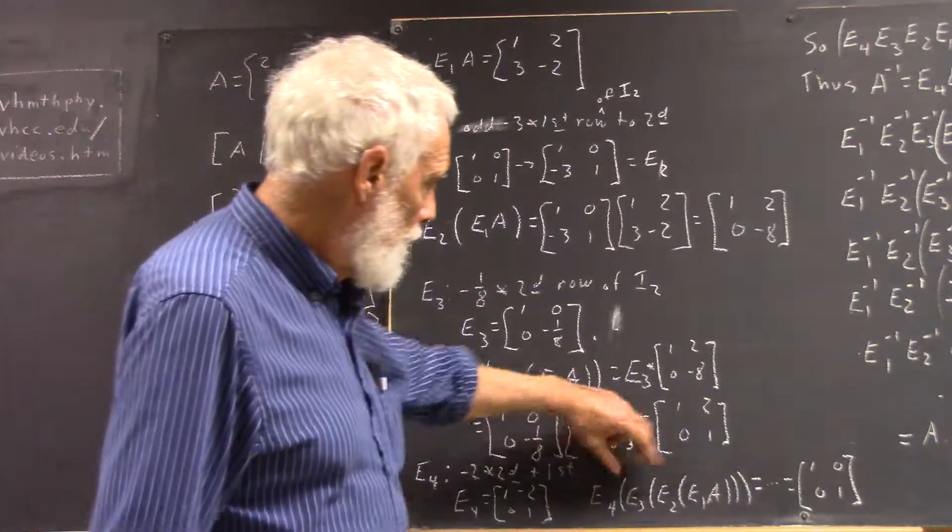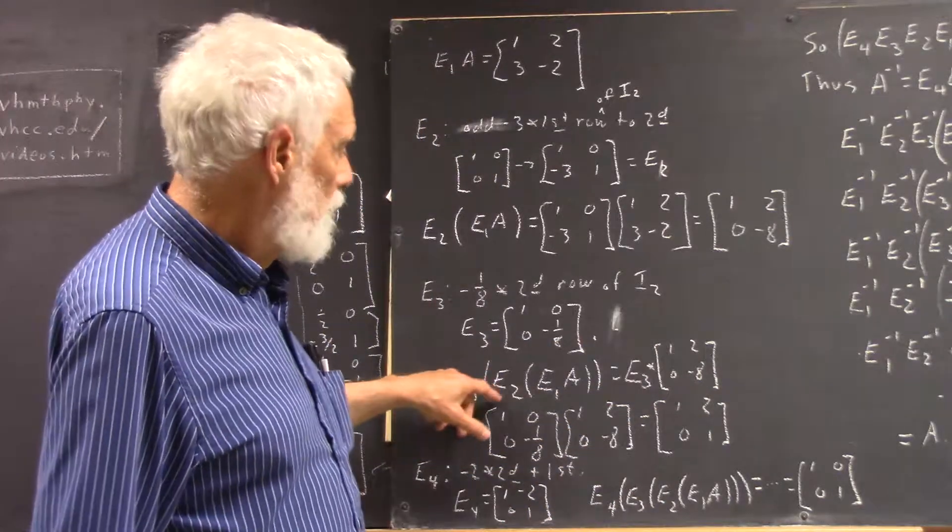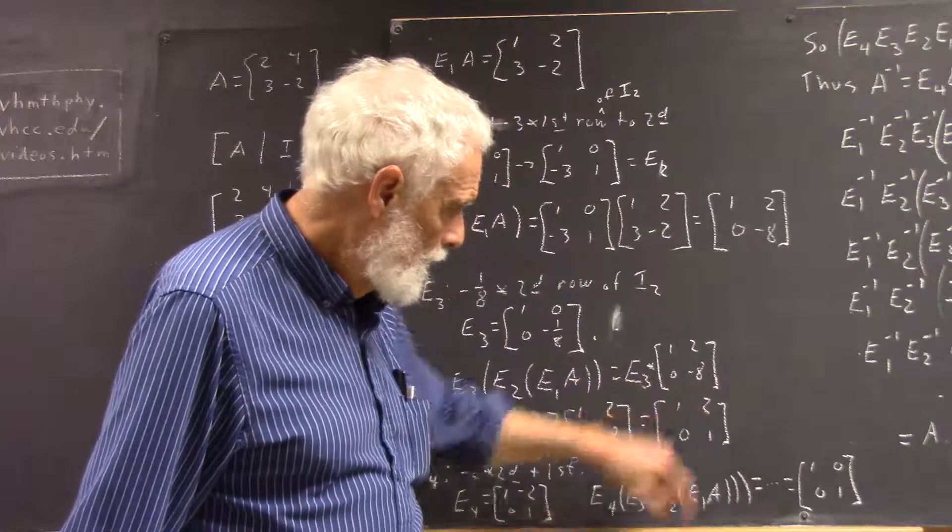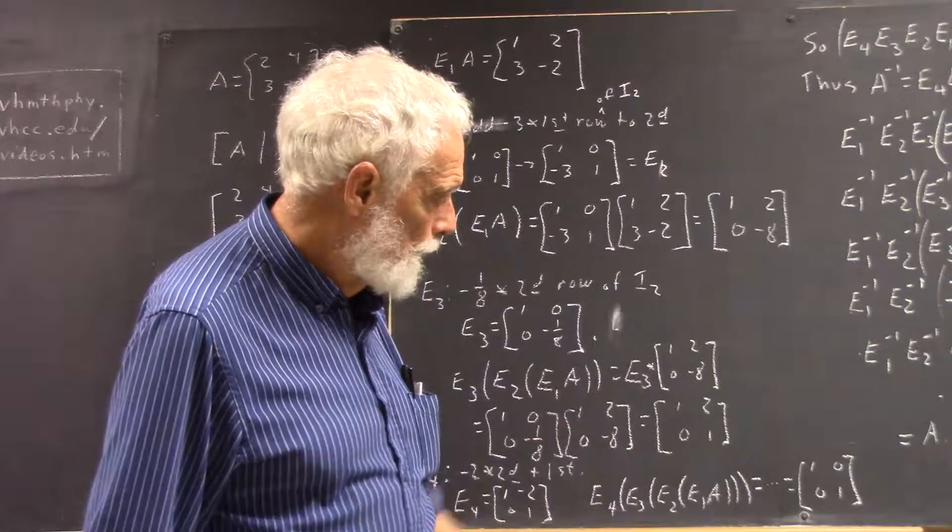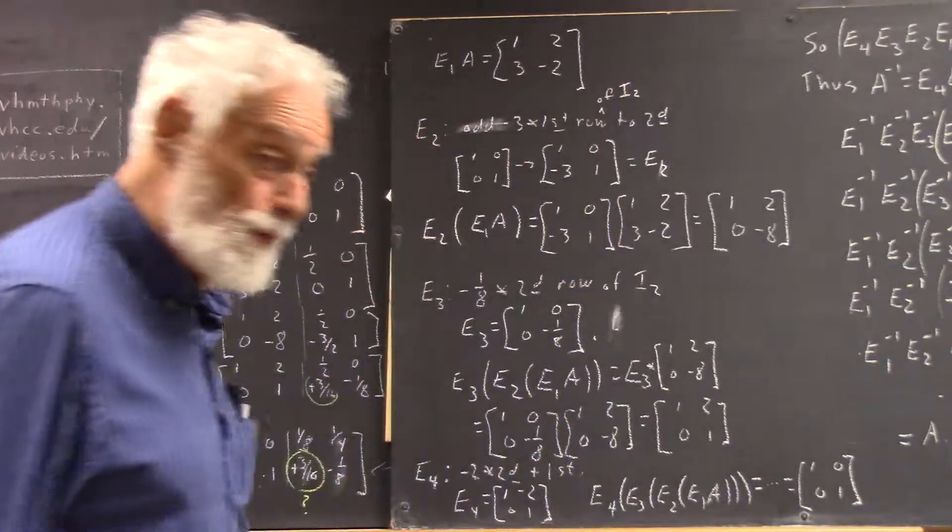We multiply that by the matrix we had before. And, of course, the matrix we had before was E3 times E2 times E1A. So, we get E4 times E3 times E2 times E1A. And we do the calculation and we find that we do get the identity.